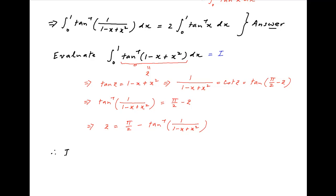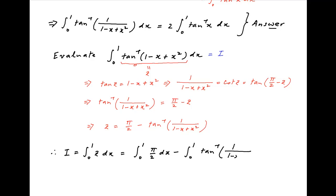Therefore, the integral I, which is equal to the integral from 0 to 1 of z dx, is equal to the integral from 0 to 1 of pi upon 2 dx minus the integral from 0 to 1 of tan inverse of 1 upon (1 minus x plus x squared) dx. Now, we have already established in the first part of the problem that this second term on the right-hand side is equal to 2 times the integral from 0 to 1 of tan inverse x dx.